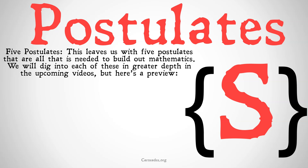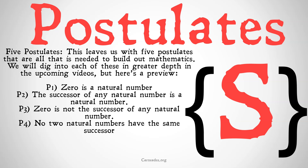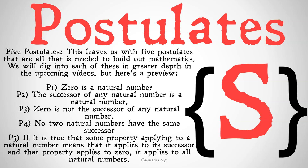We're going to dig into each of these in greater depth in upcoming videos, but here's a preview. Postulate one: zero is a natural number. Postulate two: the successor of any natural number is also a natural number. Postulate three: zero is not the successor of any natural number. Postulate four: no two natural numbers have the same successor. And postulate five, also known as the principle of mathematical induction: if it is true that some property applying to a natural number means that it applies to its successor, and that property applies to zero, then it applies to all natural numbers.